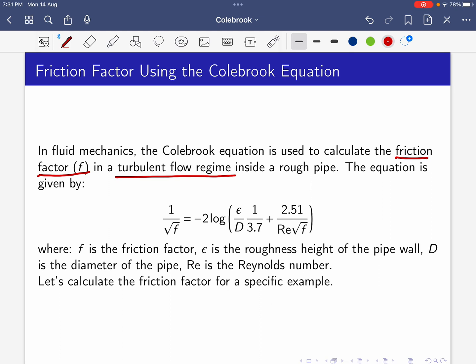Here f is the friction factor, epsilon is the roughness height of the pipe wall, D is the diameter of the pipe, and Re is the Reynolds number. Now let's calculate the friction factor for a specific example.